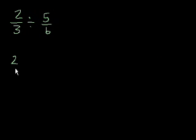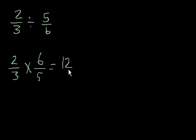What is 2 thirds divided by 5 over 6? Well, we know that this is the same thing as 2 thirds times 6 over 5. And that's equal to 12 over 15. And we could divide the numerator and the denominator by 3. That's 4 over 5.